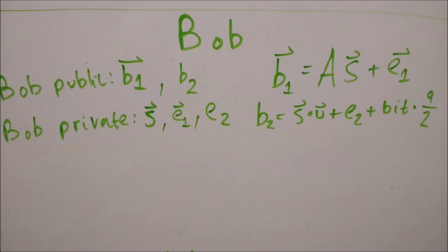To compute b2, Bob takes s as before, but this time multiplies it by Alice's public key u, adds a different error term e2 with the same description but different values, and then finally adds a third term, bit times q over 2, where the bit is his message, a 0 or a 1 that he wants to send, and q over 2 is an integer of substantial magnitude mod q that is also much larger than any error values.